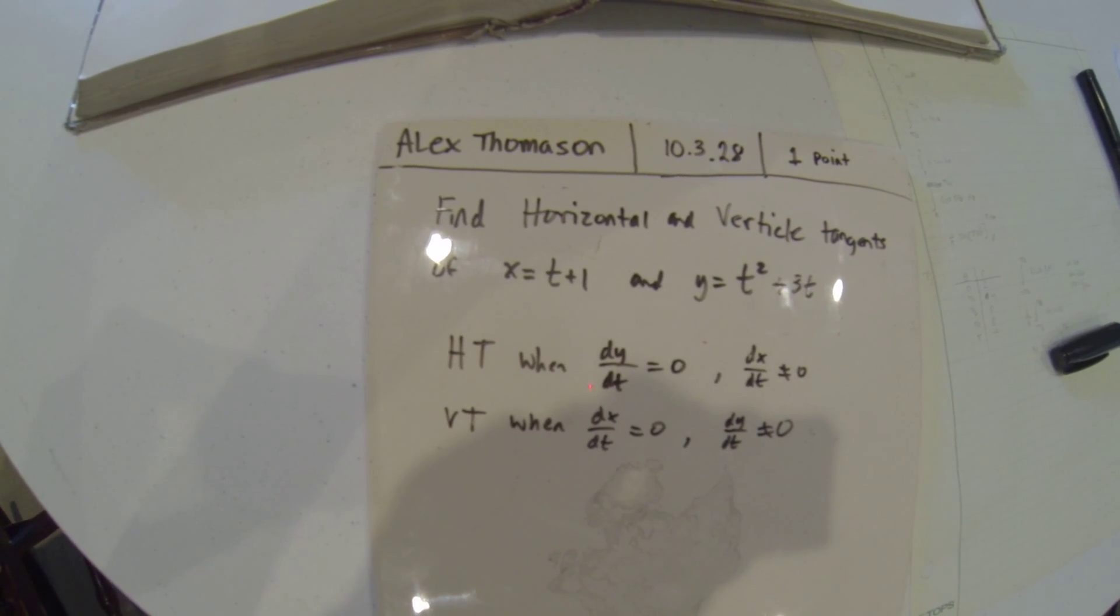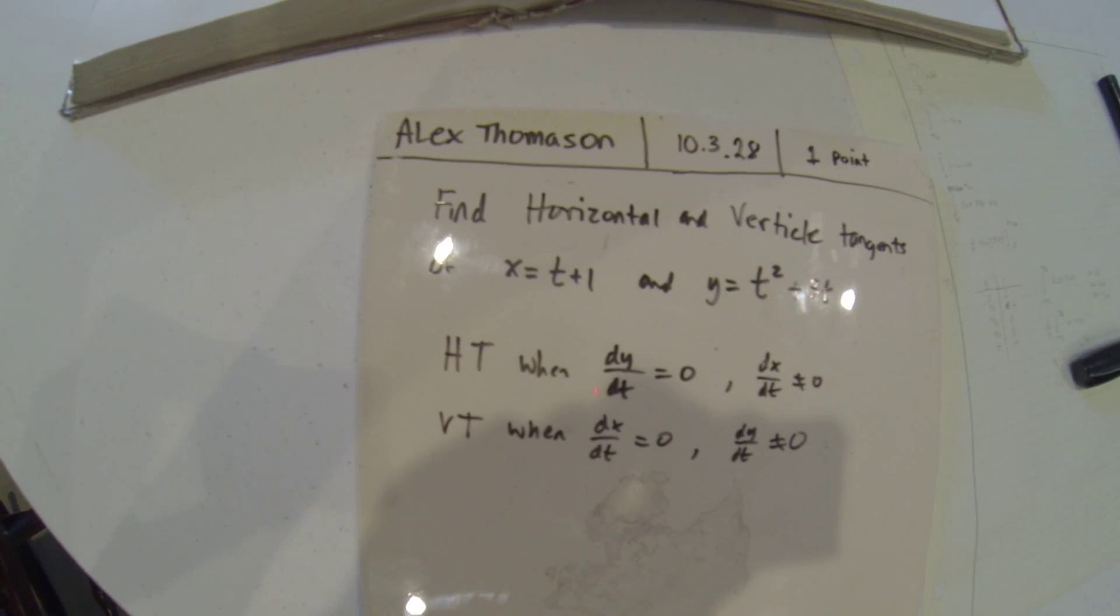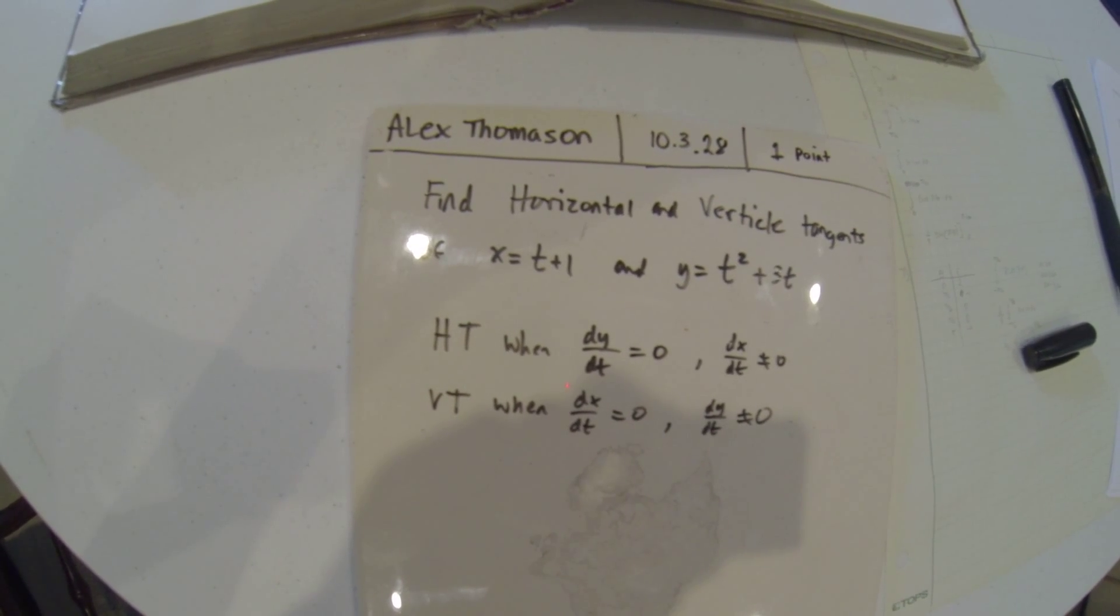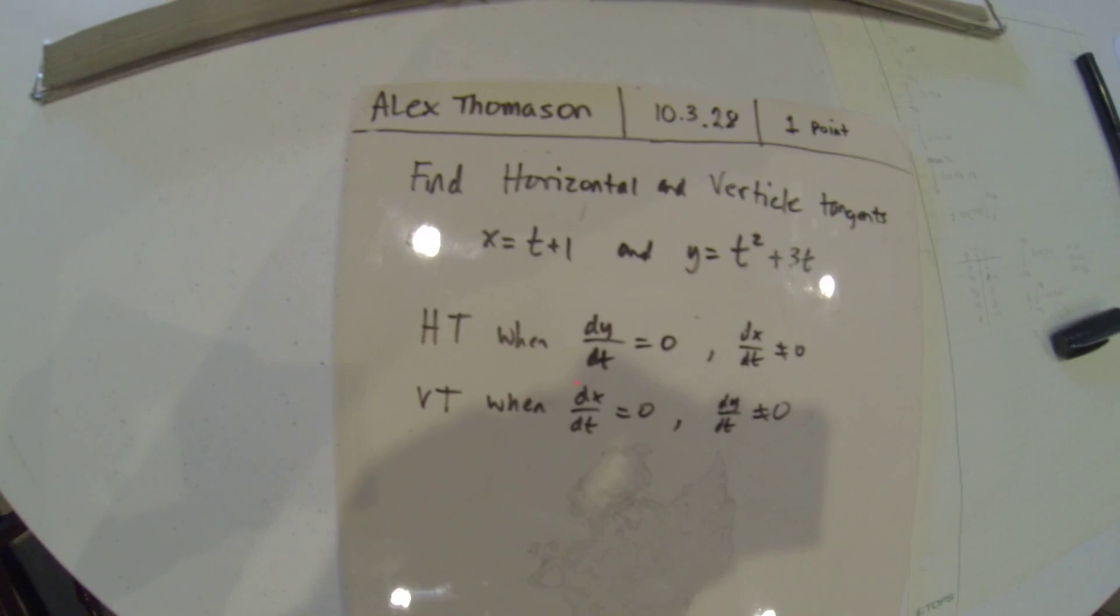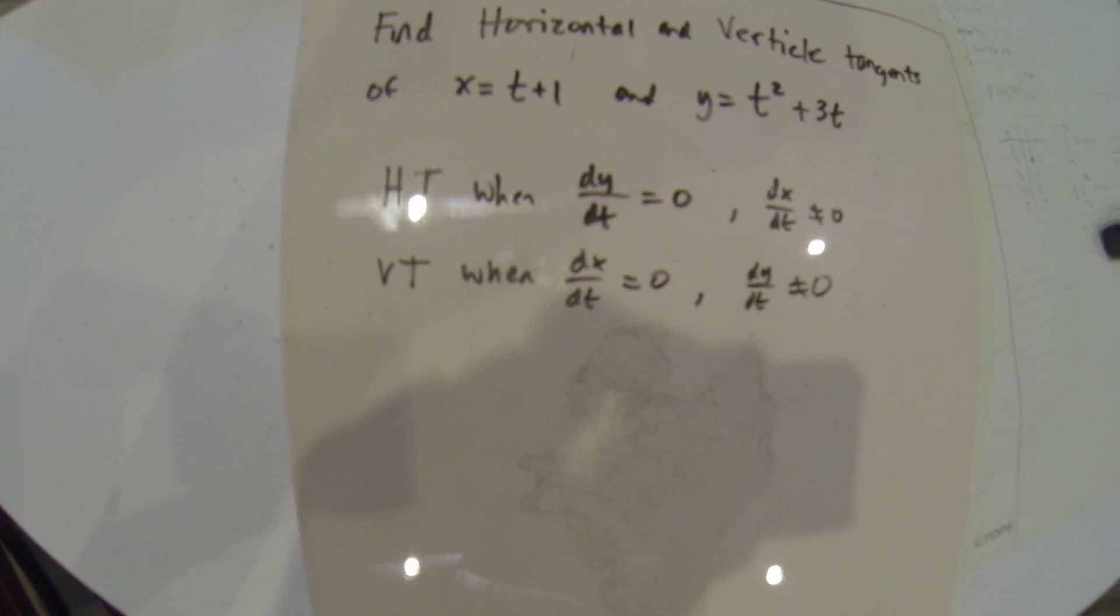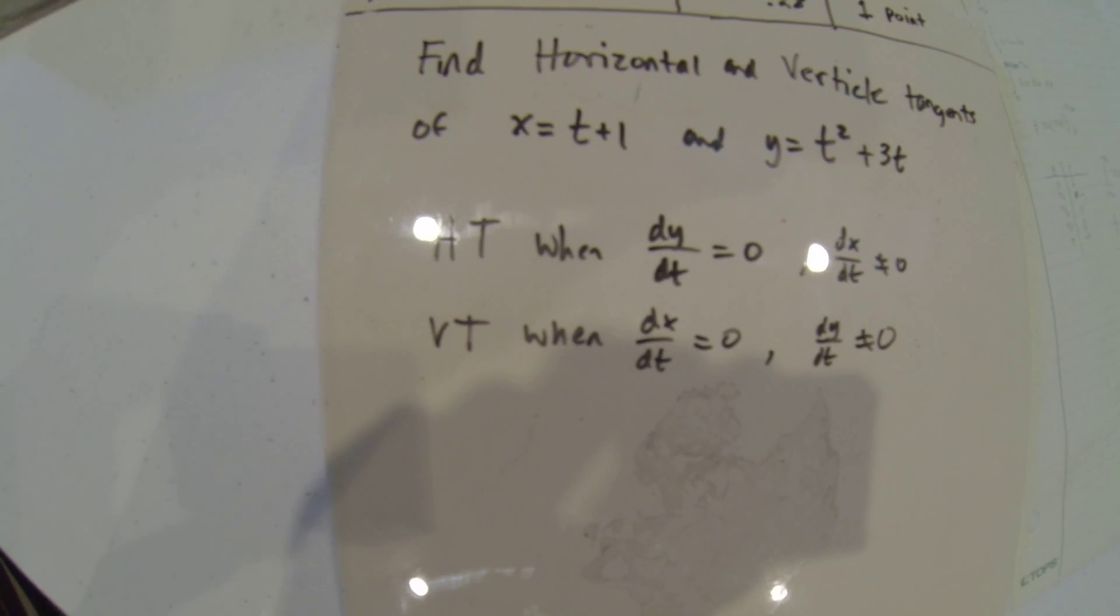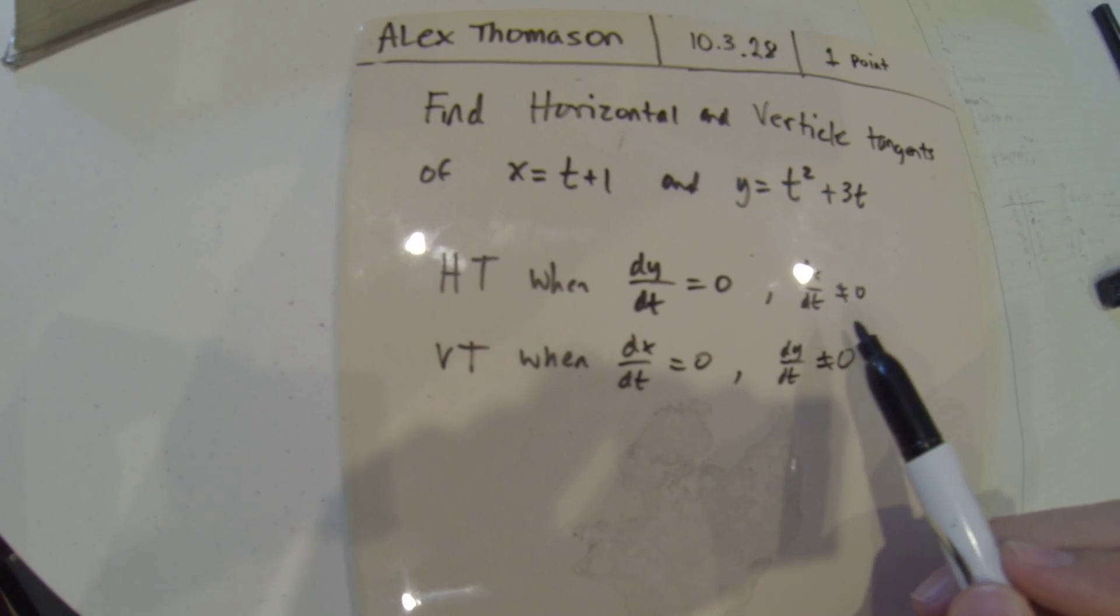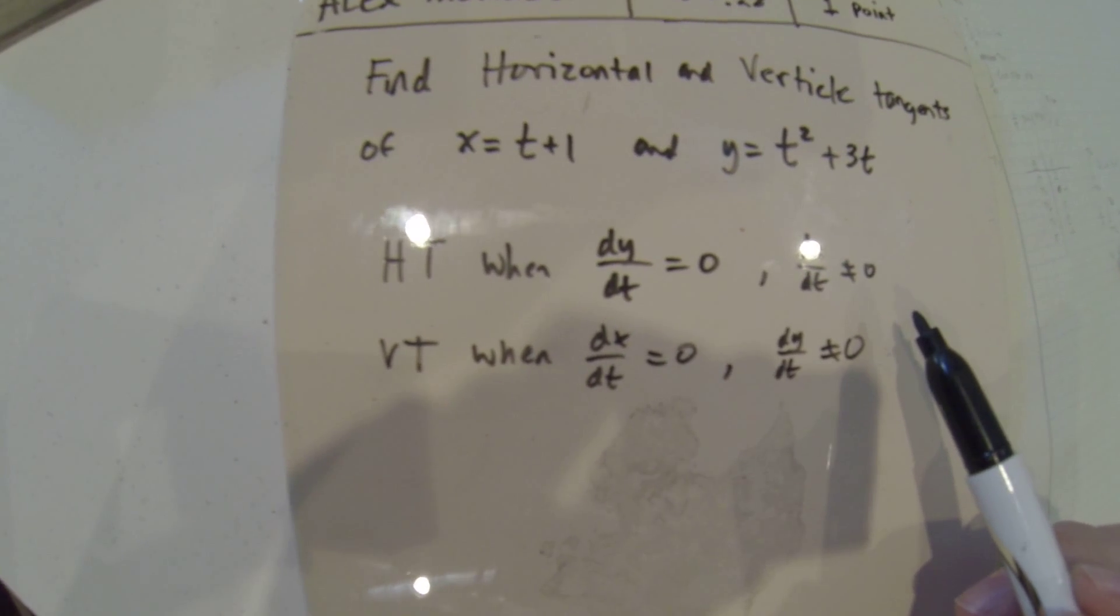The question asks us to find the horizontal and vertical tangents of the parametric equations x equals t plus 1 and y equals t squared plus 3t. So we know that there are horizontal tangents when dy dt equals 0, given that dx dt does not equal 0.